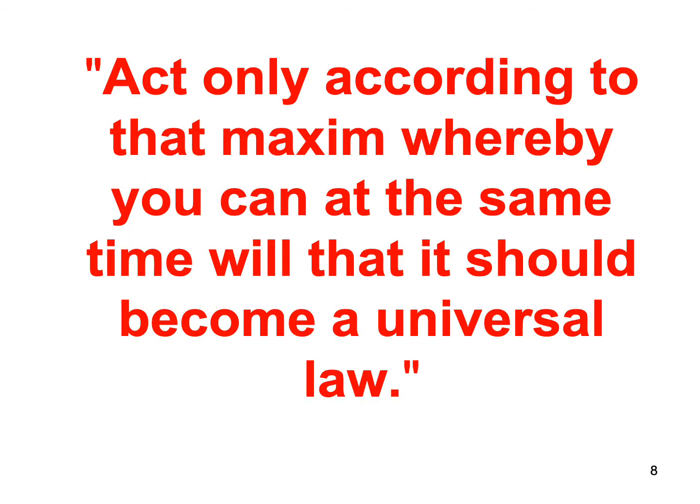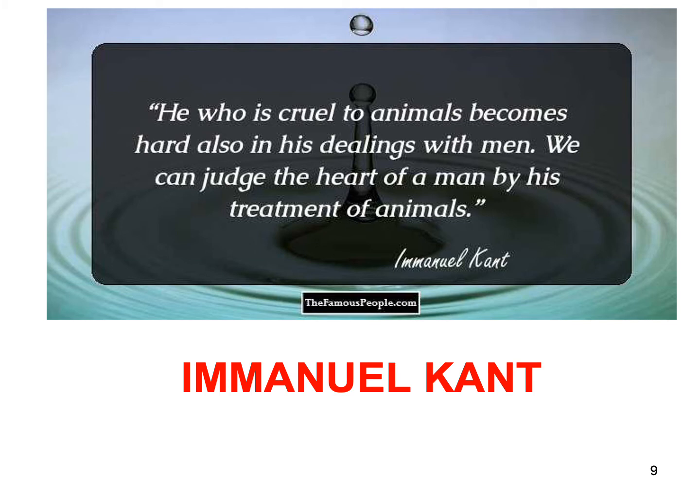The main central moral idea of Kant is: act only according to that law which you could will to be universal. Act in the way that if you kill, everybody has the right to kill; if you steal, everybody has the right to steal; if you lie, everybody has the right to lie. And if you are cruel to animals, everybody can do the same. Concerning animal protection, he wrote: 'He who is cruel to animals becomes hard also in his dealings with men. We can judge the heart of a man by his treatment of animals.'